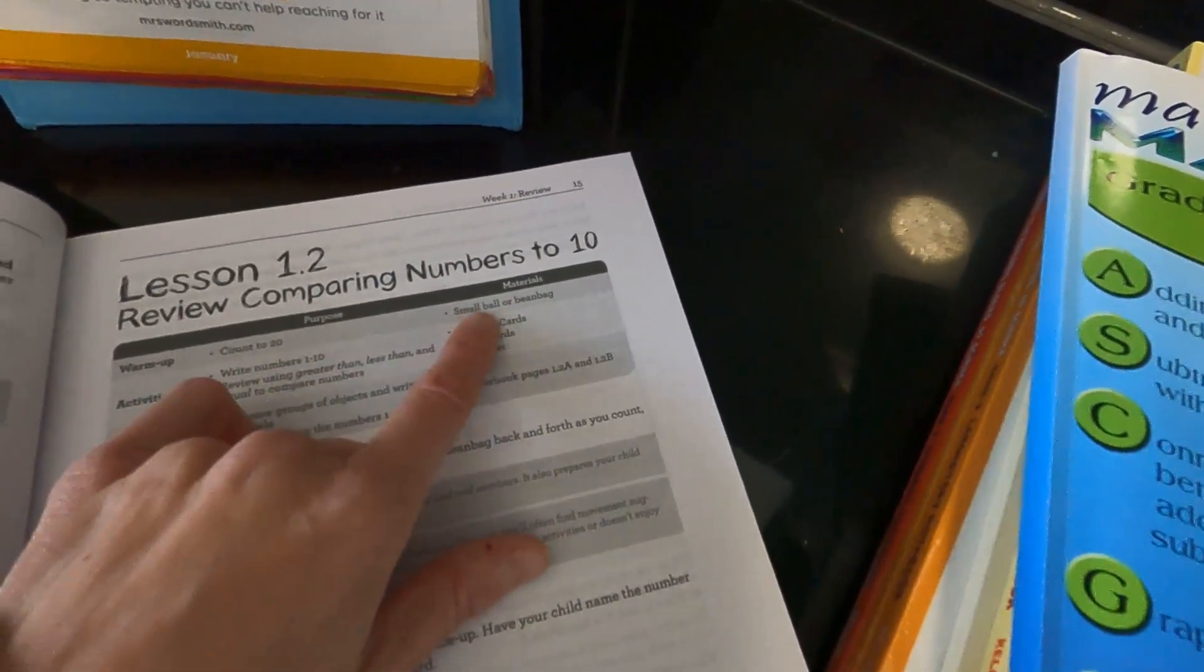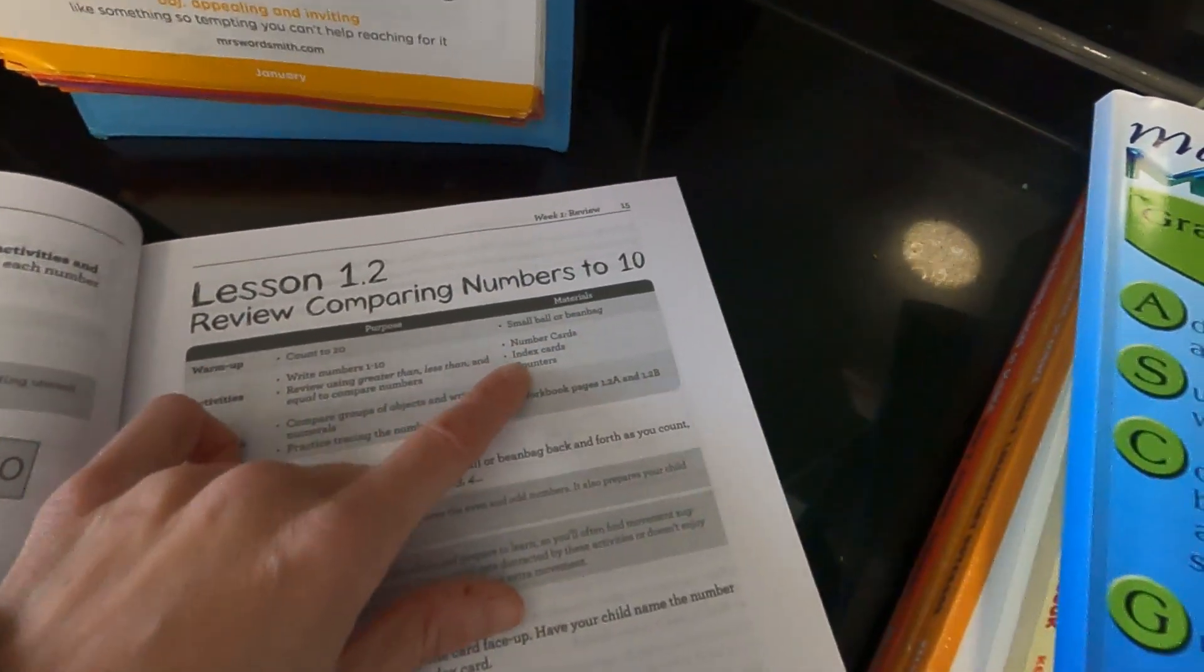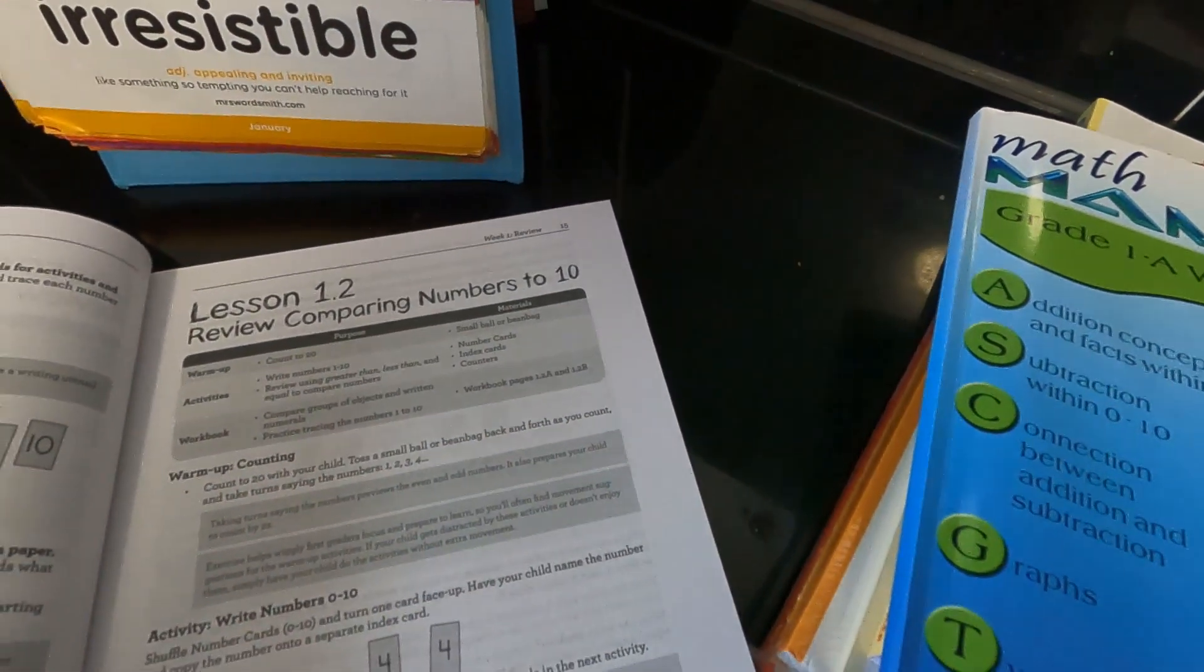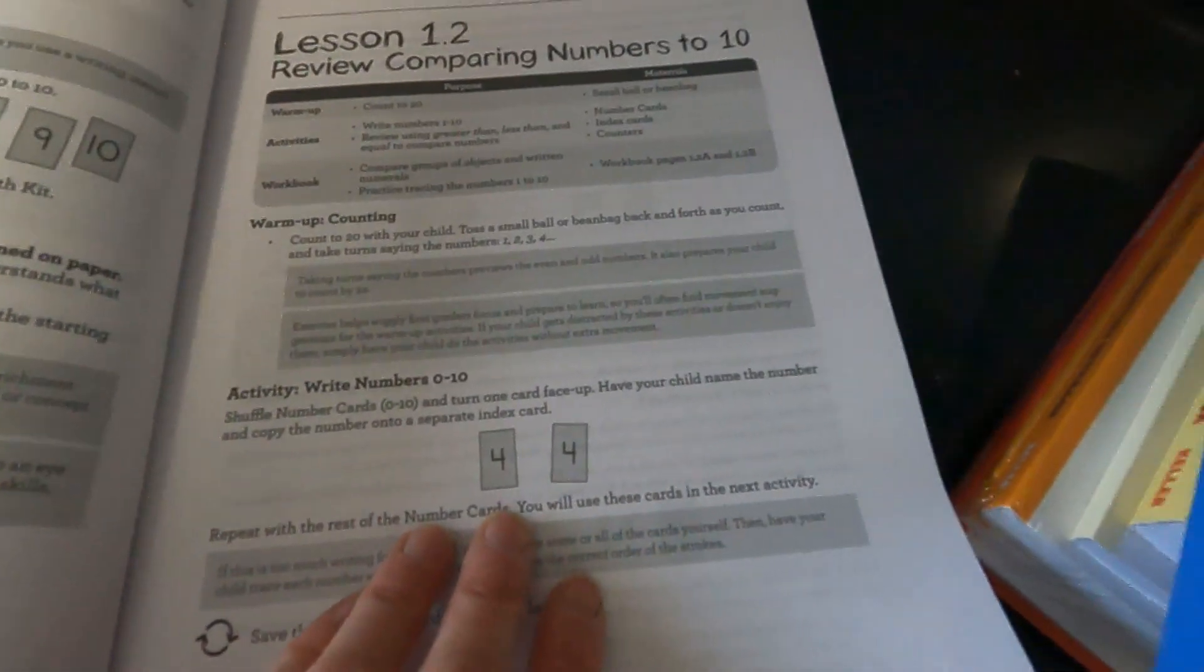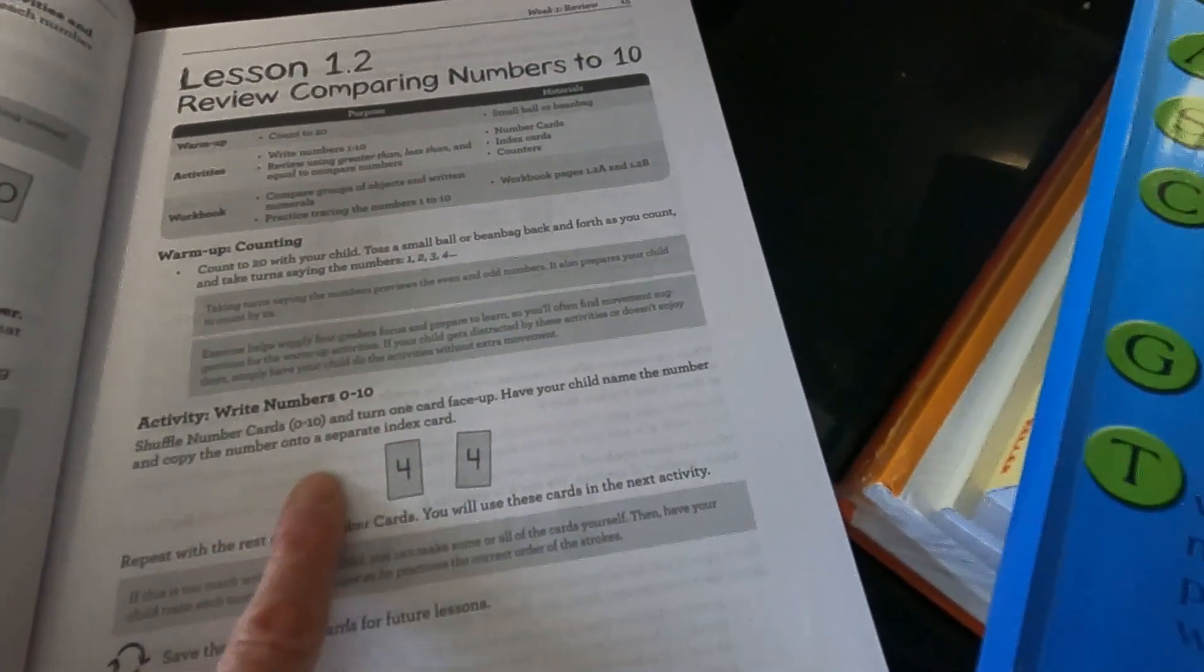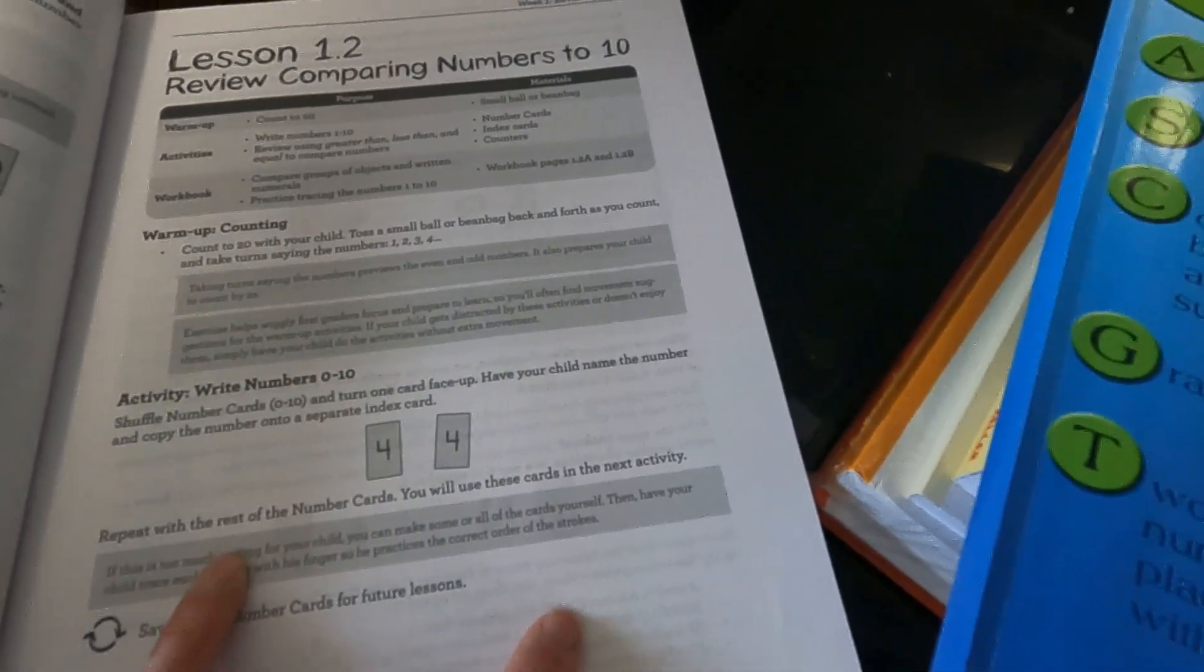So this is one lesson, right? And the materials you need is a snowball or beanbag or a small ball or beanbag, number cards, index cards, counters. Now these are things that you assemble yourself and you have in your kit. And then you do workbook pages 1.2a and 1.2b.